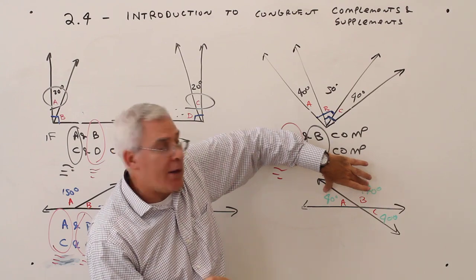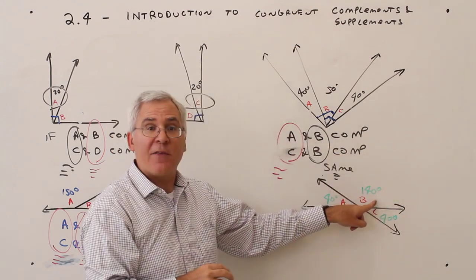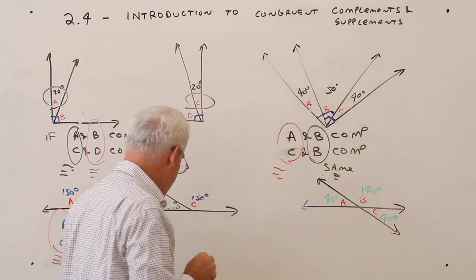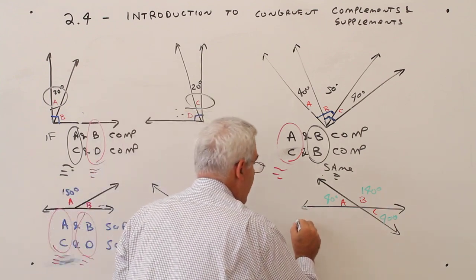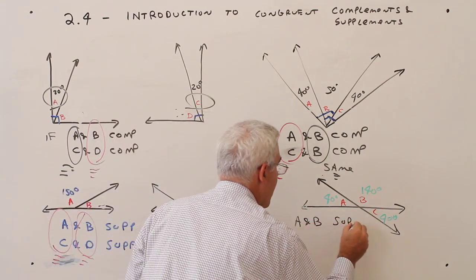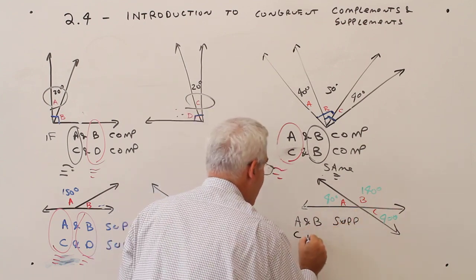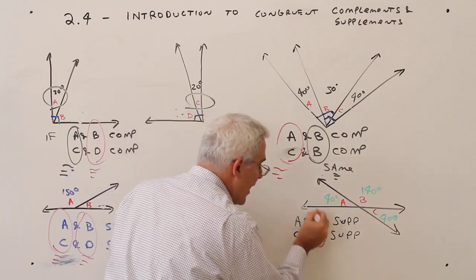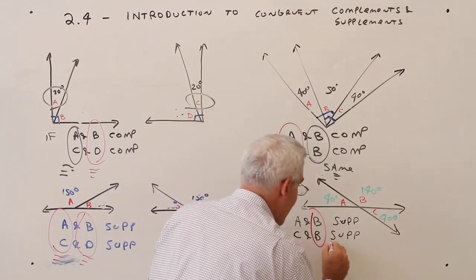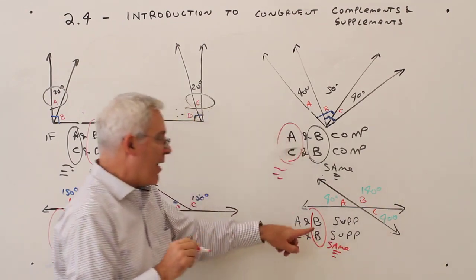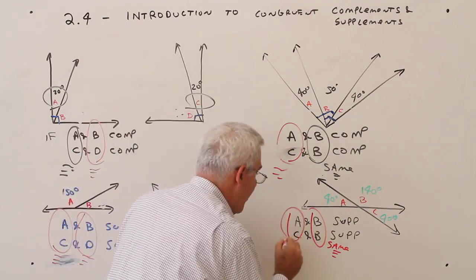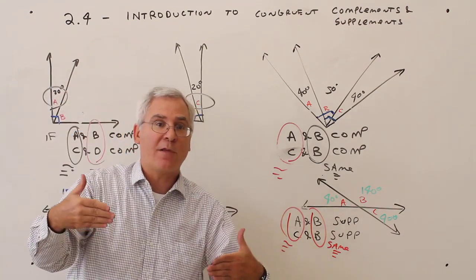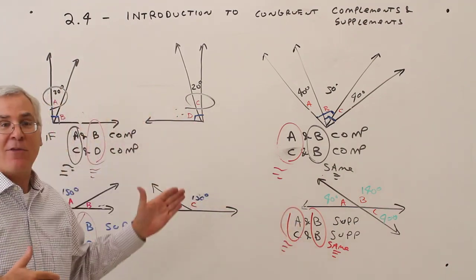If A and B are supplementary, and C and B are supplementary, and this angle B is shared — congruent to itself — then A and C must be congruent. Kind of like what we had in the complements example. Writing it down: A and B are supplementary; C and B are supplementary. Since those angles are the same, they're congruent, and therefore those two chunks must be congruent.